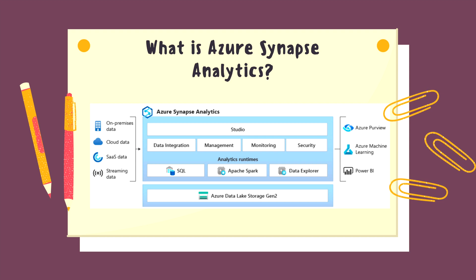As you can see on your screen, this is a semantic diagram of Azure Synapse Analytics. At the base, you will see Azure Data Lake Storage Gen 2, and on top of that everything has been built — that is your SQL, Apache Spark, Data Explorer, and all those analytics engines. On the extreme left-hand side, there are the data sources, which can be on-premise, cloud, SaaS data, or streaming data. Everything can be ingested into Azure Synapse Analytics, where you will do your data integration, management, monitoring, and security. Using Azure Synapse Analytics Studio, you can manage everything. On the right-hand side, you can see Azure Purview, which is the data governance service by Microsoft Azure. You can also do machine learning on top of that, or visualize data using Power BI.